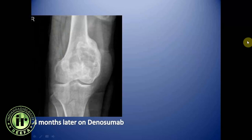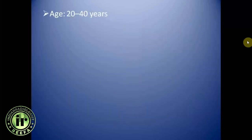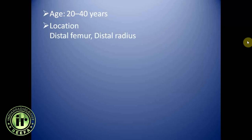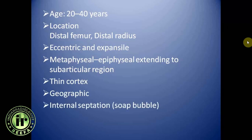This patient was histopathologically proven GCT and was treated with denosumab for four months, which led to ossification of the tumor matrix followed by cementing of the lesion. Giant cell tumor predominantly affects the 20 to 40 years age group. The most common locations are distal femur and distal radius. Lesions are eccentric, expansile, predominantly metaphyseal and epiphyseal, extending into the subarticular region. They can cause thinning of the cortex, have a geographic pattern of bone destruction, and internal septations from ABC transformation.